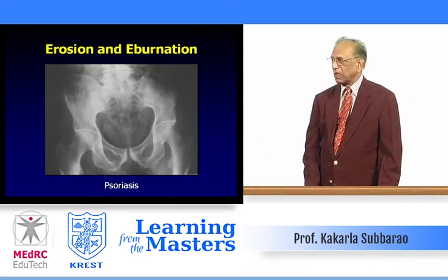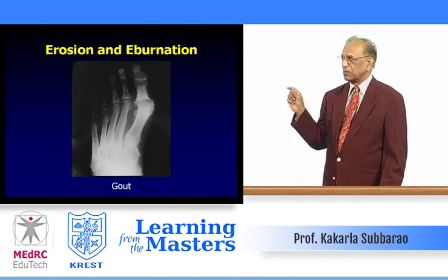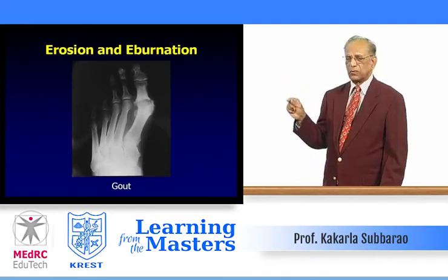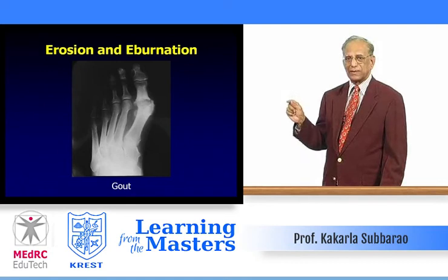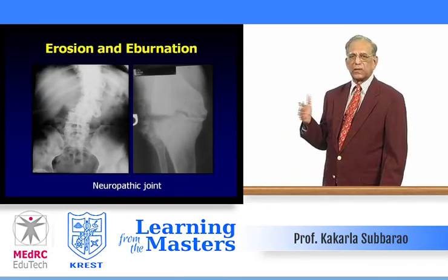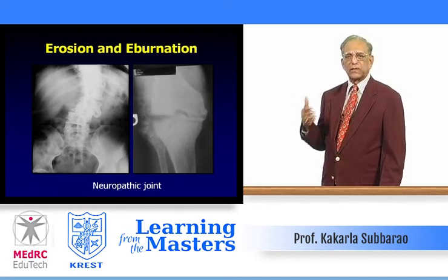Gout: narrowing of the joint space, eccentric erosions, no periarticular osteoporosis; on the other hand there is eburnation. Neuropathic joint: classically no periarticular osteoporosis, erosions early on, then eburnation, and ultimately subluxation and dislocation of the joint.